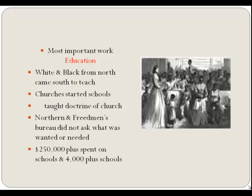By 1870, the Bureau's work in education came to an end, and the task became the states' responsibility. Most of the problems were caused by a lack of knowledge on the part of the white men and women trying to help—they didn't know what the Black man needed or wanted. More than a quarter of a million dollars had been spent educating the former slaves by the Bureau, and more than 4,000 schools were built. There were also schools built by churches, which taught the dogma of their respective religions.